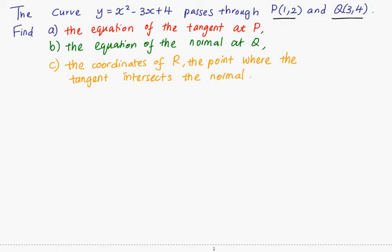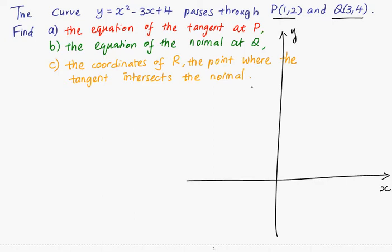Let me show you a diagram to illustrate this problem. See, this is the curve y equals x squared minus 3x plus 4. And you have two points on the curve P equals 1, 2.